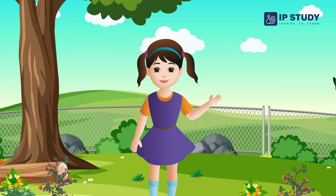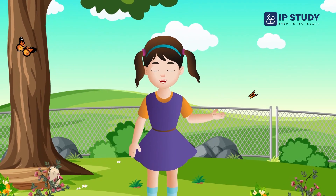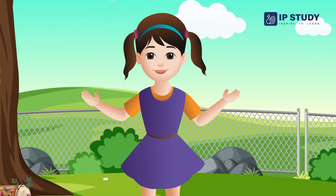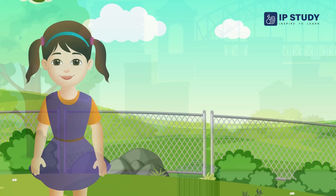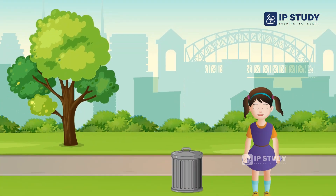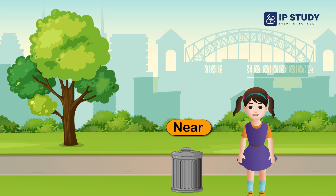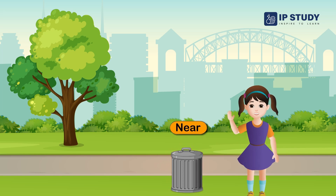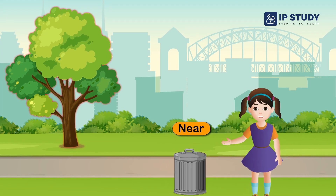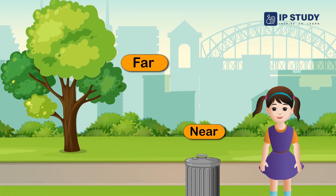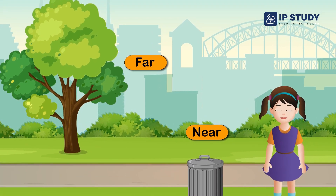Now let us look at some examples for better understanding. Let's see an example in the park. Look at this dustbin. This is near to me. And look at that tree. That tree is far from me.